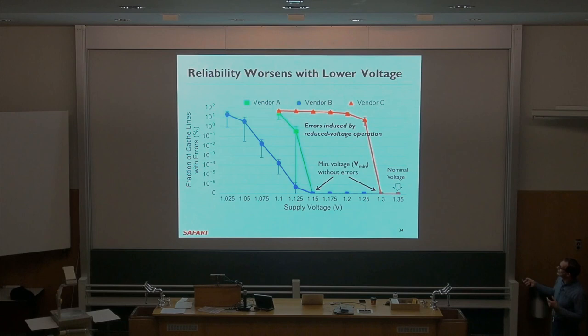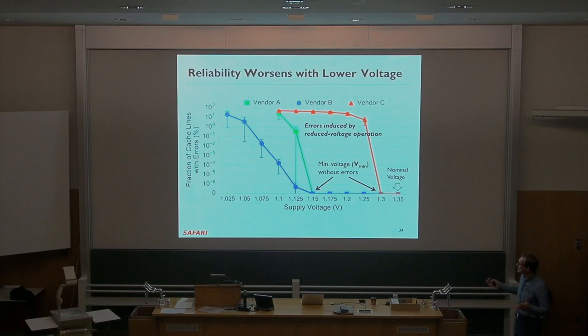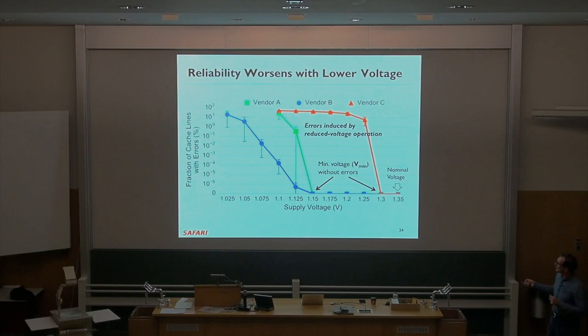Once you go below some voltage level, you get a lot of errors in some vendors — pretty much 60–100% of cache lines start experiencing errors very quickly, for example at 1.25V. But for some other vendors, there's a lot of voltage margin. Manufacturers try to be as reliable as possible, but after some point you get errors. The curve is very interesting because there's a huge margin between 1.35V and 1.15V, even in chips not designed for low-voltage operation.